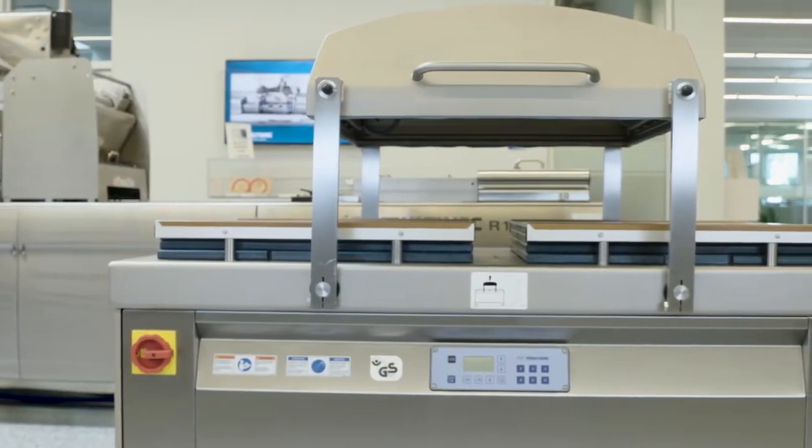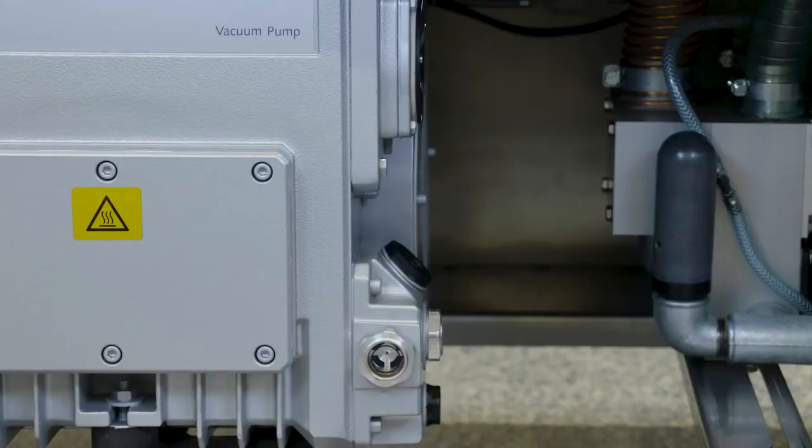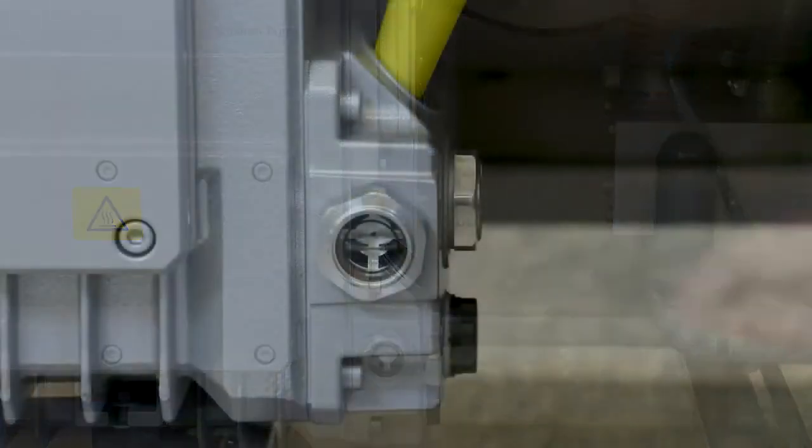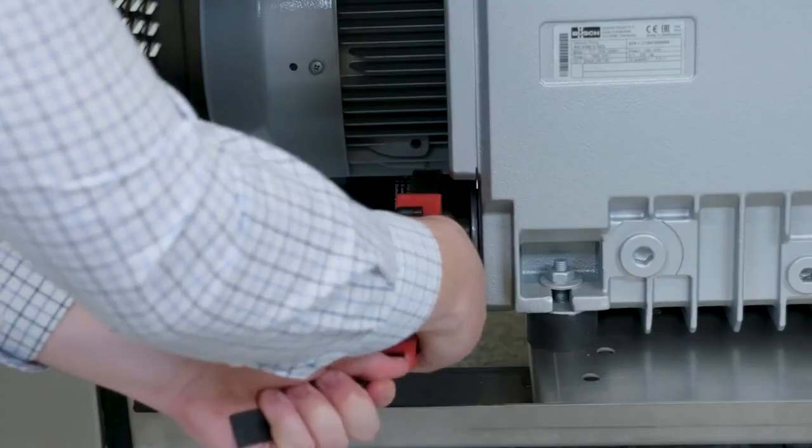In general, you should exchange the oil every 500 to 750 operating hours or as soon as the oil becomes discolored. You should top off the oil if the level falls below the one-quarter full mark in the sight glass.